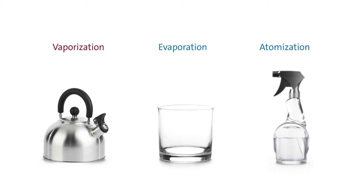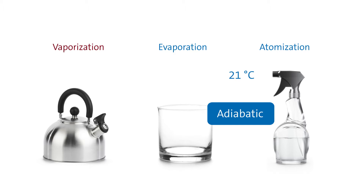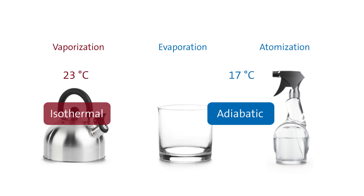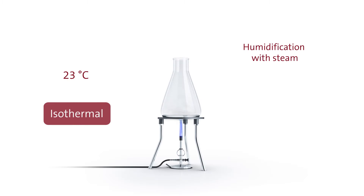The essential difference between these methods lies in the fact that with adiabatic methods air is cooled down. However, the air temperature remains constant with steam humidification. Steam does not require additional energy to enter into gaseous state since it already is gaseous.